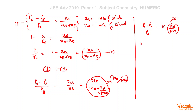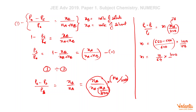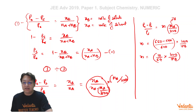The solvent is benzene with molecular mass 78. We get the molality m directly: m equals (650 minus 640) divided by 640, multiplied by 1000 divided by 78. This gives m equals 10 over 640 times 1000 over 78, which is the molality in moles per kg.